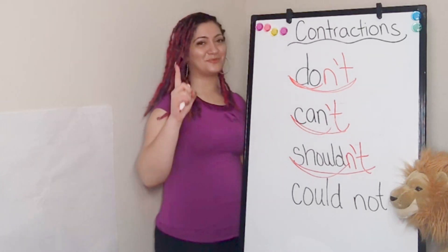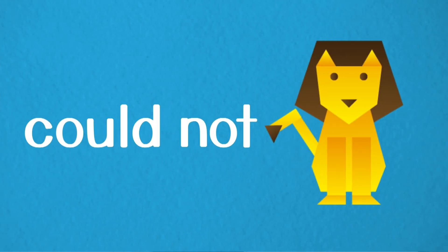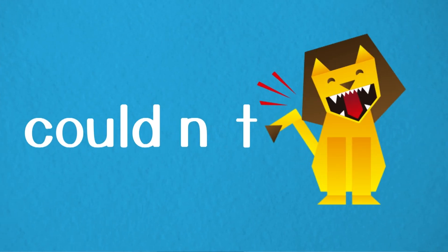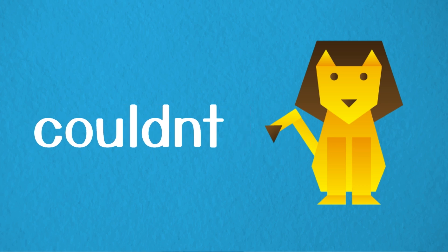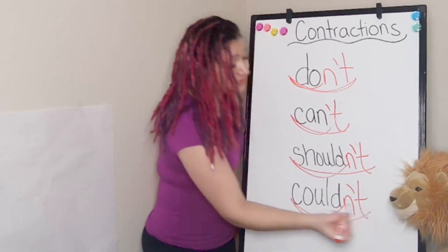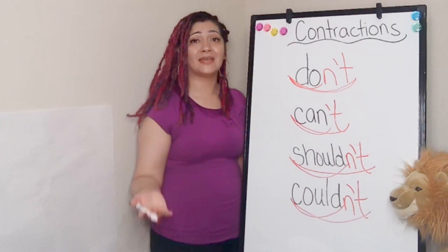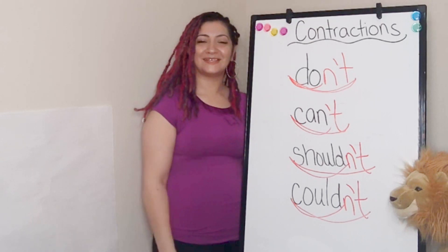All right, one more. And our pair is could not. Loud, we're ready. Nice job, Loud, getting rid of that O. Loud wore that O away. And then what do we need to put in its place? We need to go boop, put that apostrophe there. And now our new word is couldn't. So if you could not do something, you couldn't do it. Nice work, scholars.